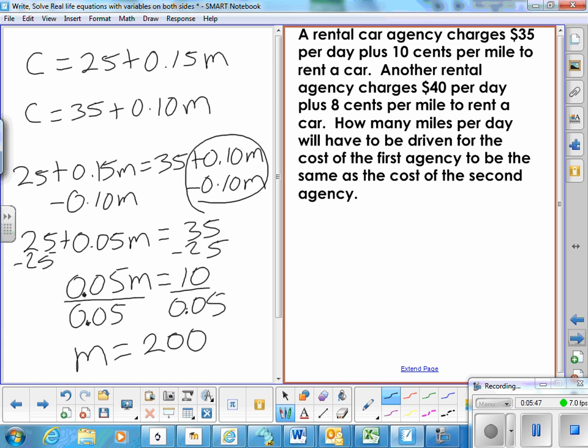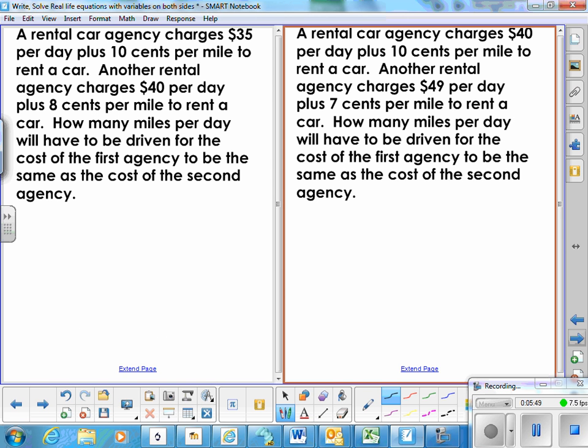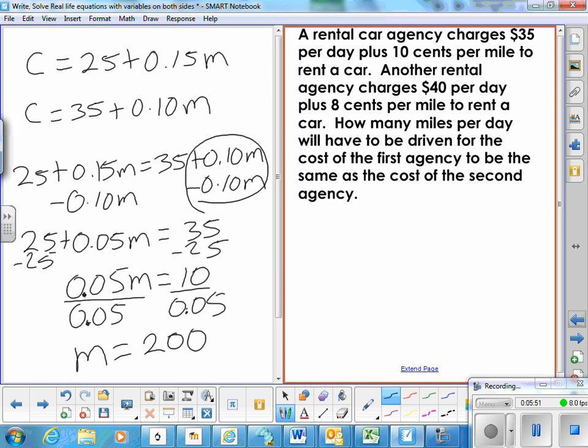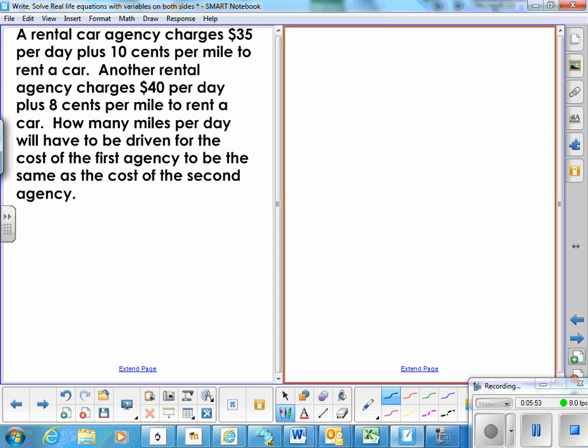Let's try another example. I'll change the situation a little bit. So $0.35 per day plus $0.10 per mile, $0.40 per day and $0.08 per mile. So at some point those will be equal.